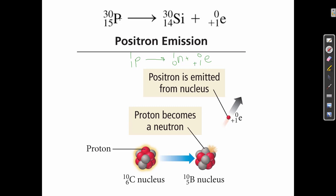Here's an example: phosphorus-30 undergoes positron emission to become silicon-30. The atomic number goes from 15 to 14, so the emitted particle must have a charge of plus one and zero mass — that's a positron. If instead the atomic number had increased from 15 to 16, the emitted particle would be zero mass and minus one charge, making it beta emission.